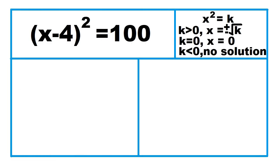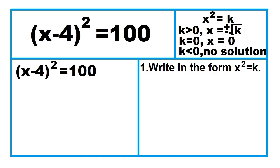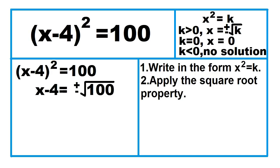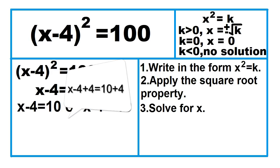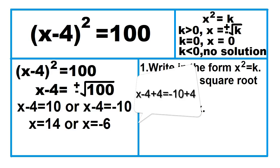Another example: the square of the quantity x minus 4 equals 100. The equation is already in the form x squared equals k. Since k is greater than 0, there are two solutions. x minus 4 equals square root of 100, or x minus 4 equals negative square root of 100. So x minus 4 equals 10 or x minus 4 equals negative 10. Using the addition property of equality, x equals 14 or x equals negative 6.